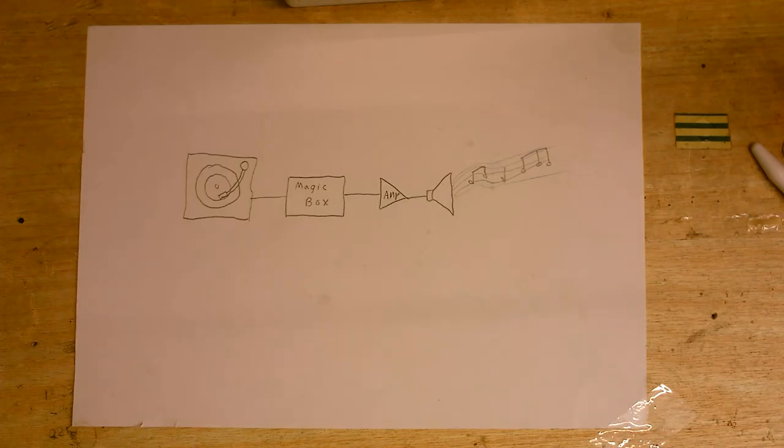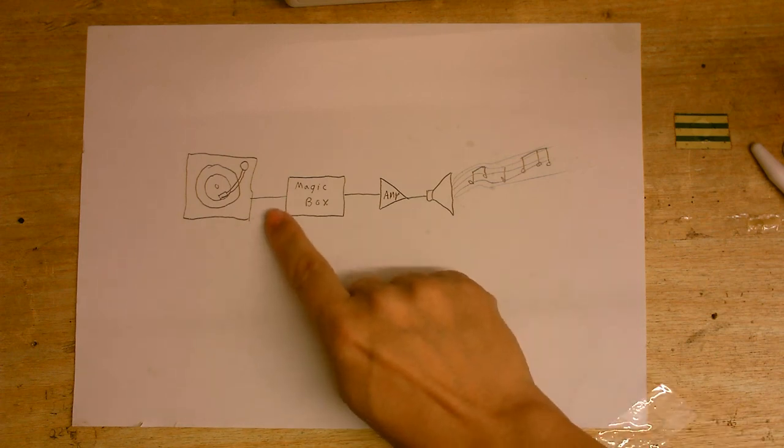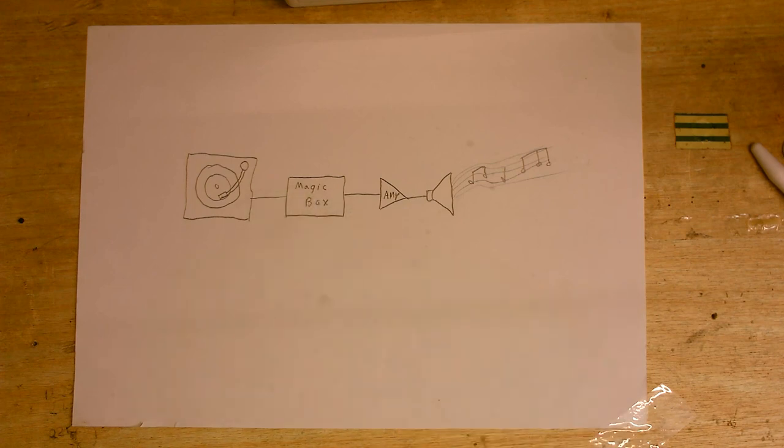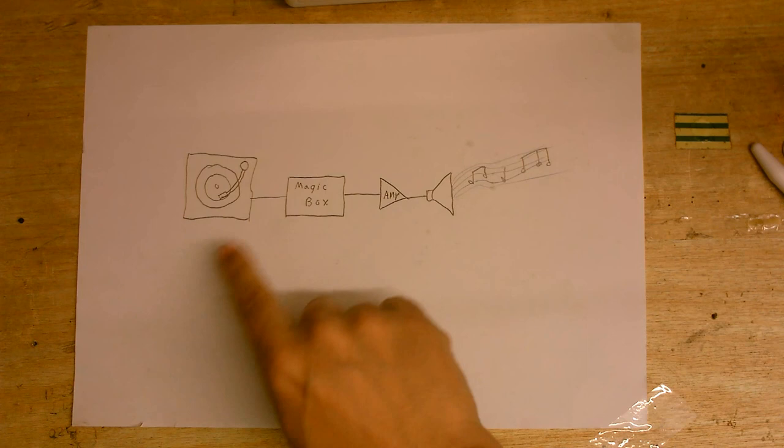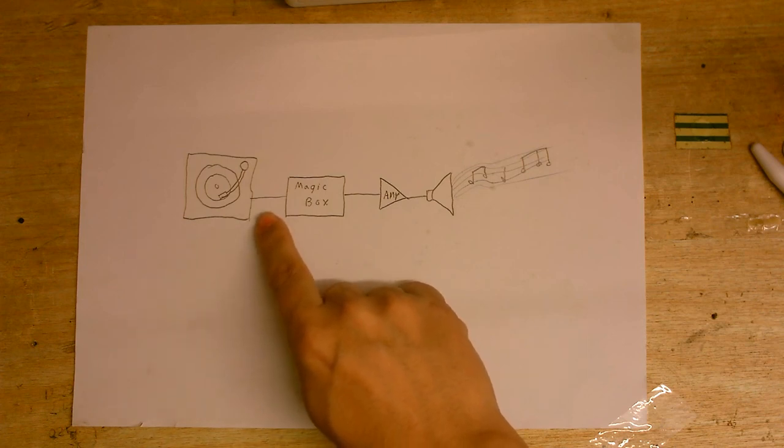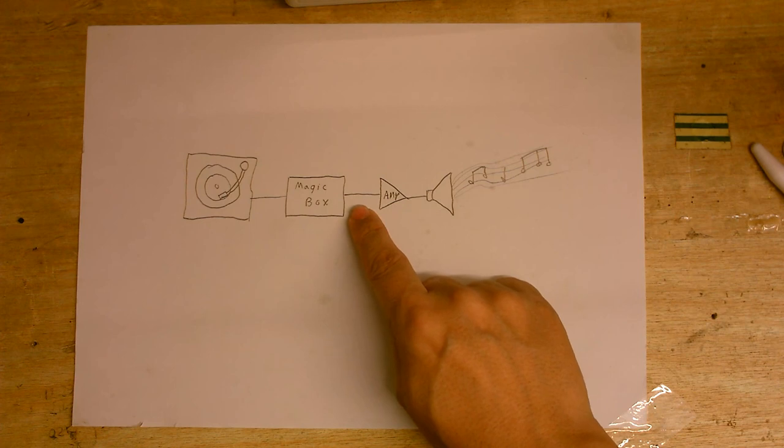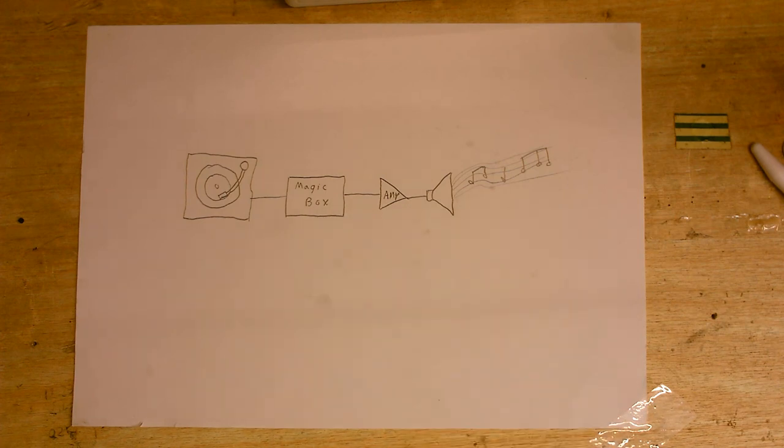So connecting one of these up to a modern amplifier is out of the question. Cannot connect it to the line input because we'll just get that shrill, tinny sound, and we definitely cannot connect it to a magnetic phono input because it's just going to overload that. So what can we do? Well, we use an impedance matching circuit.